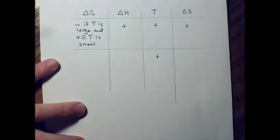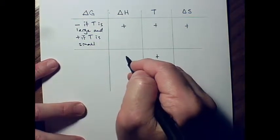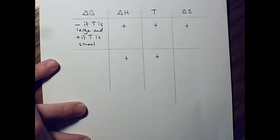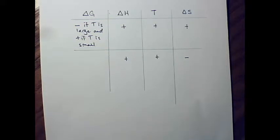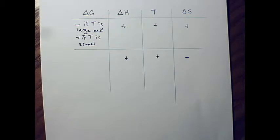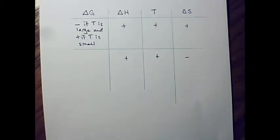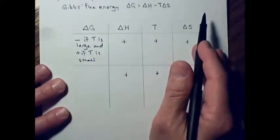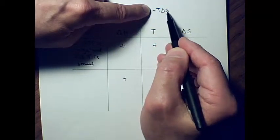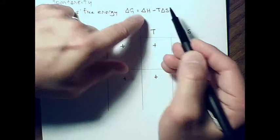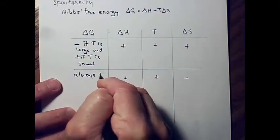What if delta H is positive and delta S is negative? The system is gaining energy and becoming more organized. In that case, delta G can never be negative. Since delta S is negative, the T times delta S term becomes negative times T, but with the subtraction sign in the equation it becomes a positive added to a positive delta H — so delta G is always positive, and the reaction is never spontaneous.